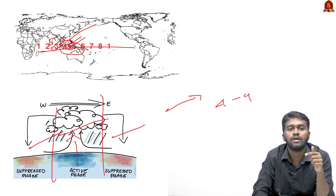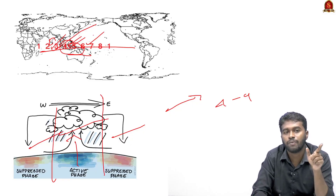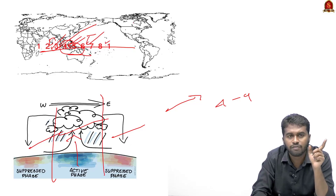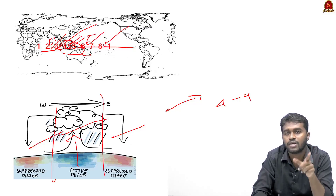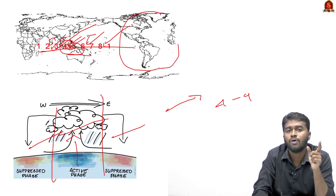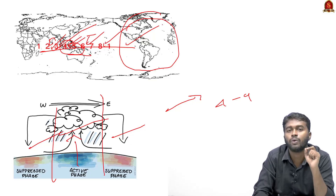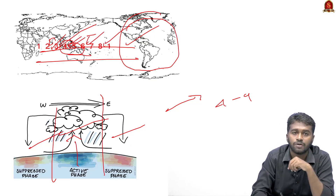The active phase between phase four and five forms over the maritime continents — such as Australia, Indonesia, and Malaysia — and this enhances the Australian monsoon, bringing more rainfall to the northern part of Australia. The next active phase is between phase six and seven, over the western Pacific, and this enhances cyclonic activity in the western Pacific. The next active phase is between phase eight and one, which covers the entire western hemisphere including the western part of the African continent, resulting in increased rainfall, storms, and cyclonic activity.